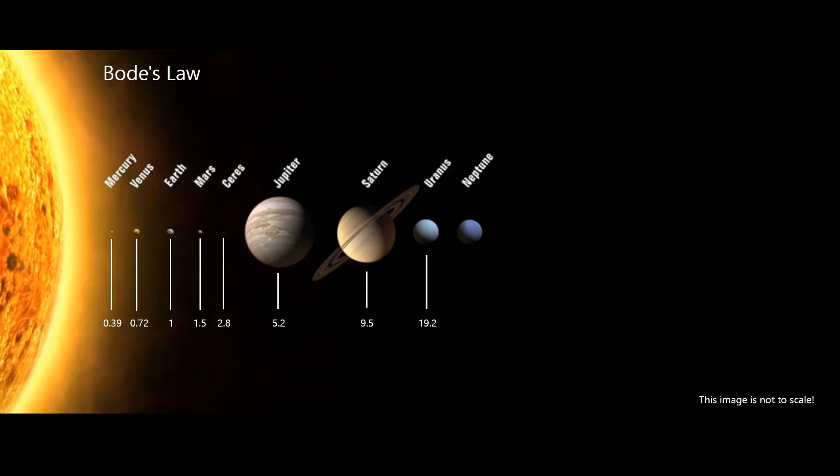There are eight planets in our solar system: Mercury, Venus, Earth, Mars, Jupiter, Saturn, Uranus, and Neptune.